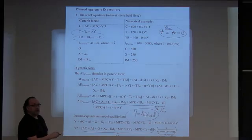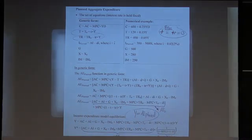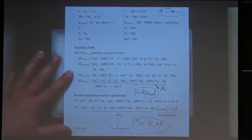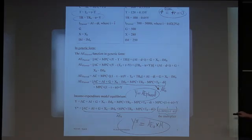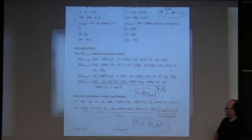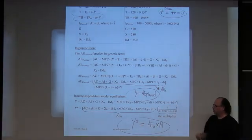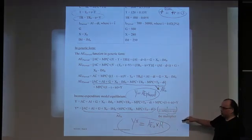Equilibrium is where income equals expenditure. Setting Y equal to the planned expenditure formula gives Y equals autonomous aggregate expenditure times the multiplier. The multiplier used to be 1 over (1 minus MPC), but now it is 1 over [1 minus MPC times (1 minus little-t minus little-tr)]. The new little-t and little-tr terms have altered the slope of the planned expenditure line and changed the multiplier.